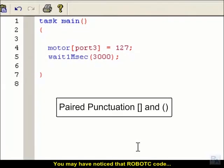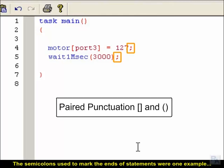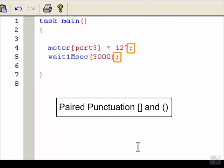You may have noticed that Robot C code tends to use a lot more punctuation than English. The semicolons used to mark the end of statements were one example, but most Robot C punctuation comes in pairs.